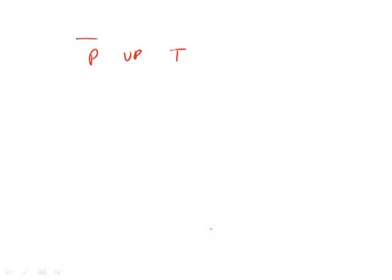We have a committee composed of a president, a vice president, and a treasurer. We want to set up our dashes — this is a typical permutations/combinations problem, but instead of laborious formulas we go straight to the dashes. Six people are trying out for three positions, so any of the six can serve anywhere: six can serve as president, five as VP, four as treasurer. We always multiply: 6 × 5 × 4 = 120, which is answer choice E.